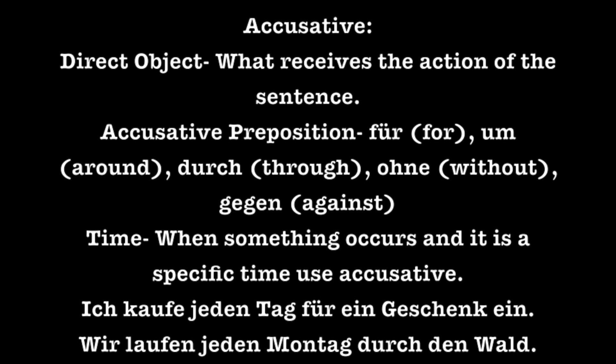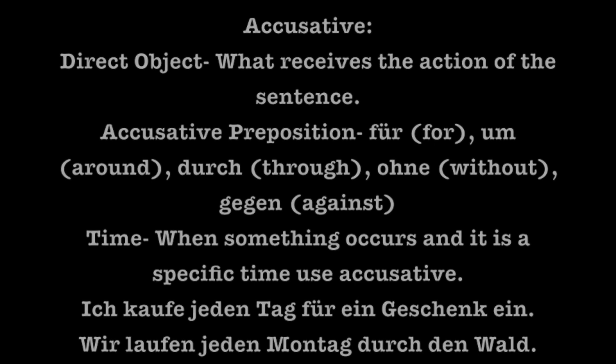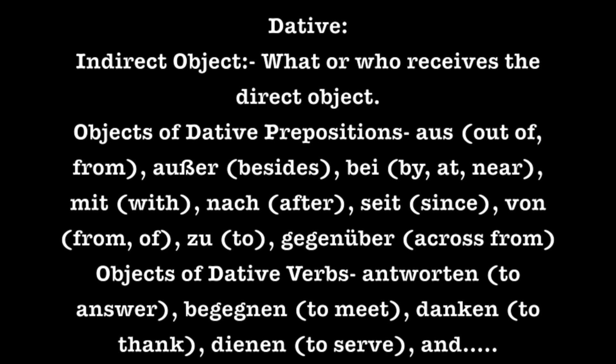There are no examples of direct objects in those sentences because I'm going to use those in the dative case here in just a minute. In the dative case, we use indirect objects — it's what or who receives the direct object, it's to whom or for whom something is being done. We also use objects of dative prepositions. The dative prepositions are aus (out of or from), außer (besides or except), bei (at or near), mit (with), nach (after), seit (since), von (from or of), zu (to), and gegenüber (across from).